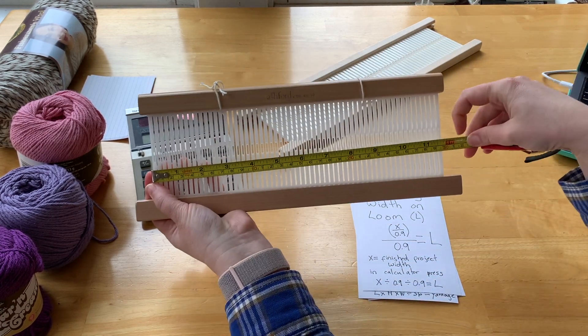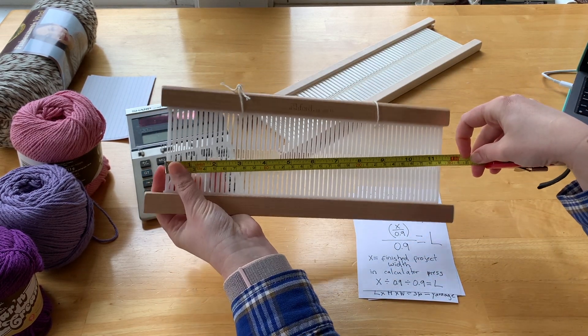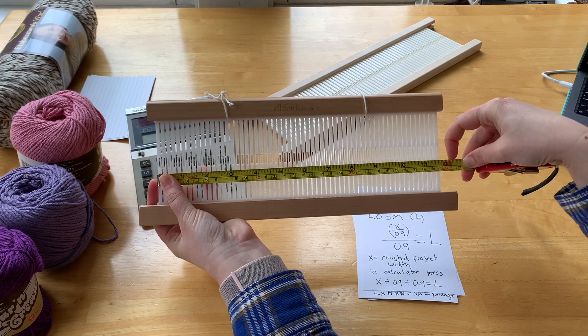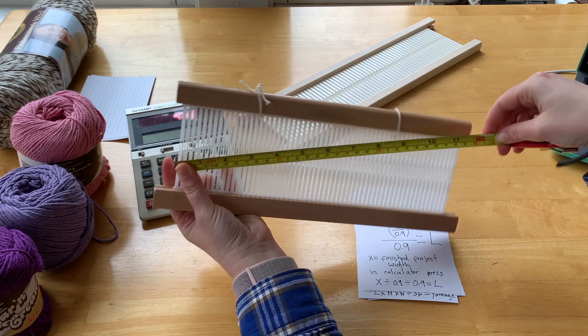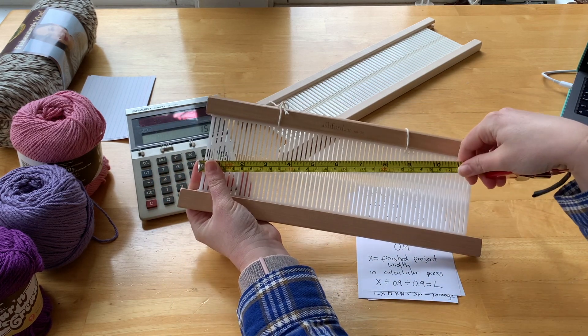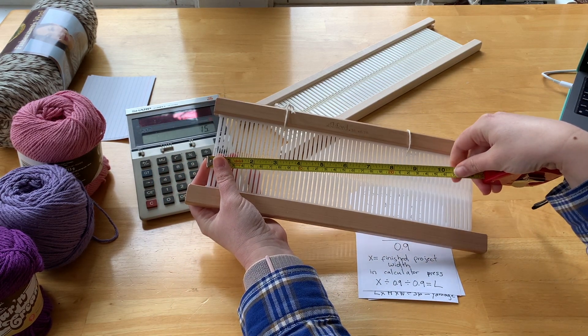But as you can quickly see, even though it is a 12-inch loom, the amount of heddle I have to work with is way less than 12. It's really more like 11 and a little bit shy of three-quarters.